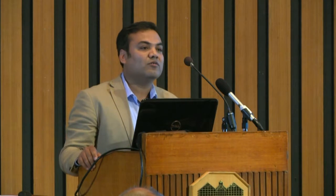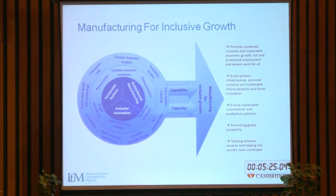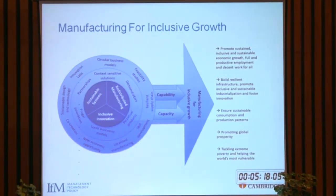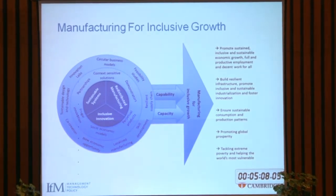Looking at inclusive manufacturing, we need to understand the key dimensions to follow. In Cambridge, at IFM, we have a concept called 'manufacturing a better world.' Within that, there's a theme called manufacturing for inclusive growth. Academics sat down and thought about what key themes might contribute to inclusive manufacturing. The three main key themes are: redistributed manufacturing, inclusive innovation, and sustainable systems.